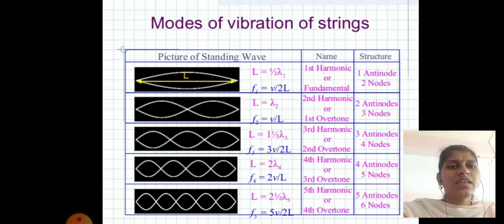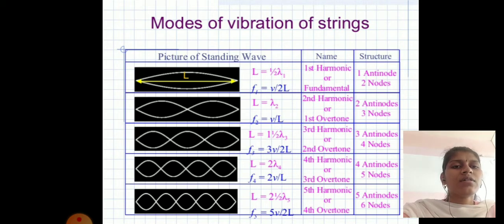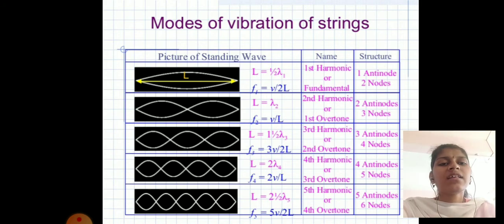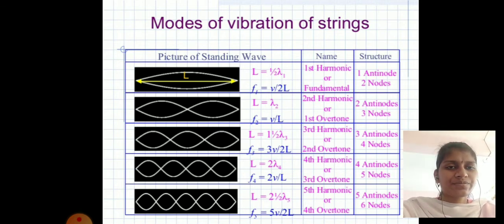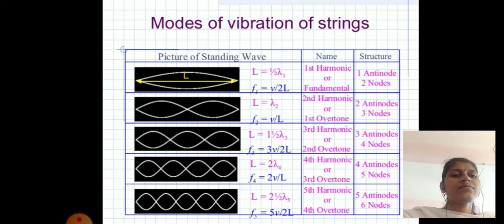Modes of vibration: first harmonic (fundamental) has 1 loop and 2 nodes, with L = λ/2. Second harmonic (first overtone) has 2 anti-nodes and 3 nodes. Third harmonic (second overtone) has 3 anti-nodes and 4 nodes. Fourth harmonic (third overtone) has 4 anti-nodes and 5 nodes. Fifth harmonic (fourth overtone) has 5 anti-nodes and 6 nodes.